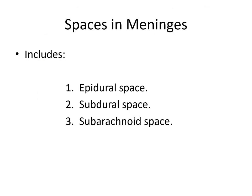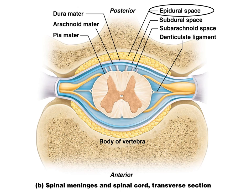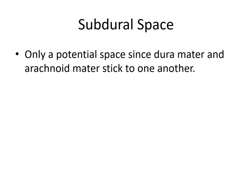There are also spaces in the meninges: the epidural space, the subdural space, and the subarachnoid space. The epidural space is between the dura mater and the vertebral foramen, and it's filled with veins and adipose tissue to cushion and protect the spinal cord. The subdural space is not really a space but a potential space, because the dura mater and the arachnoid mater stick very closely to one another.